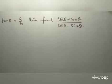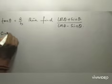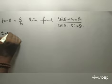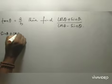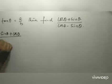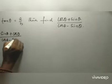If tan θ = A/B, find (cos θ + sin θ)/(cos θ - sin θ). We rewrite this as (sin θ + cos θ)/(cos θ - sin θ).